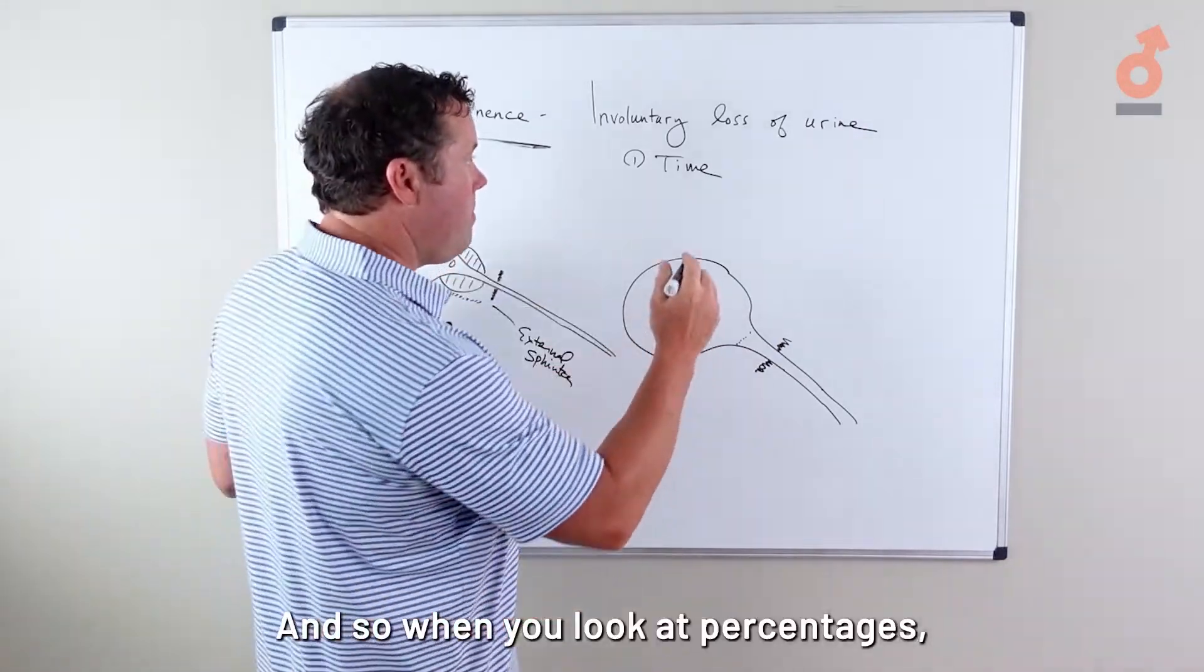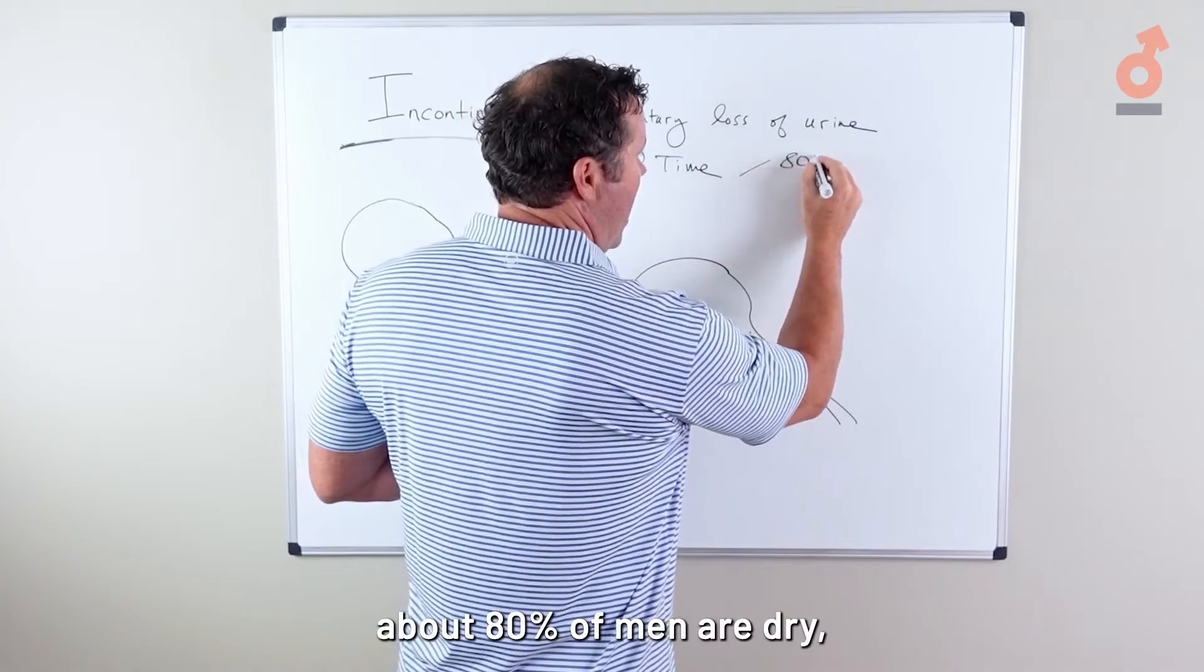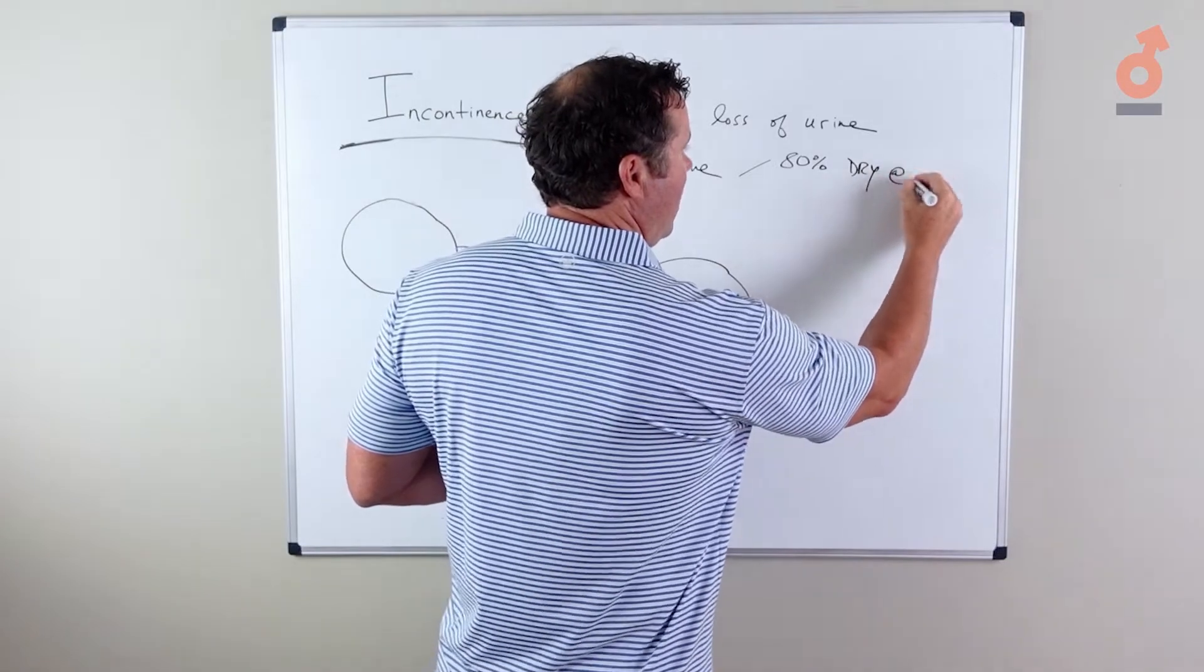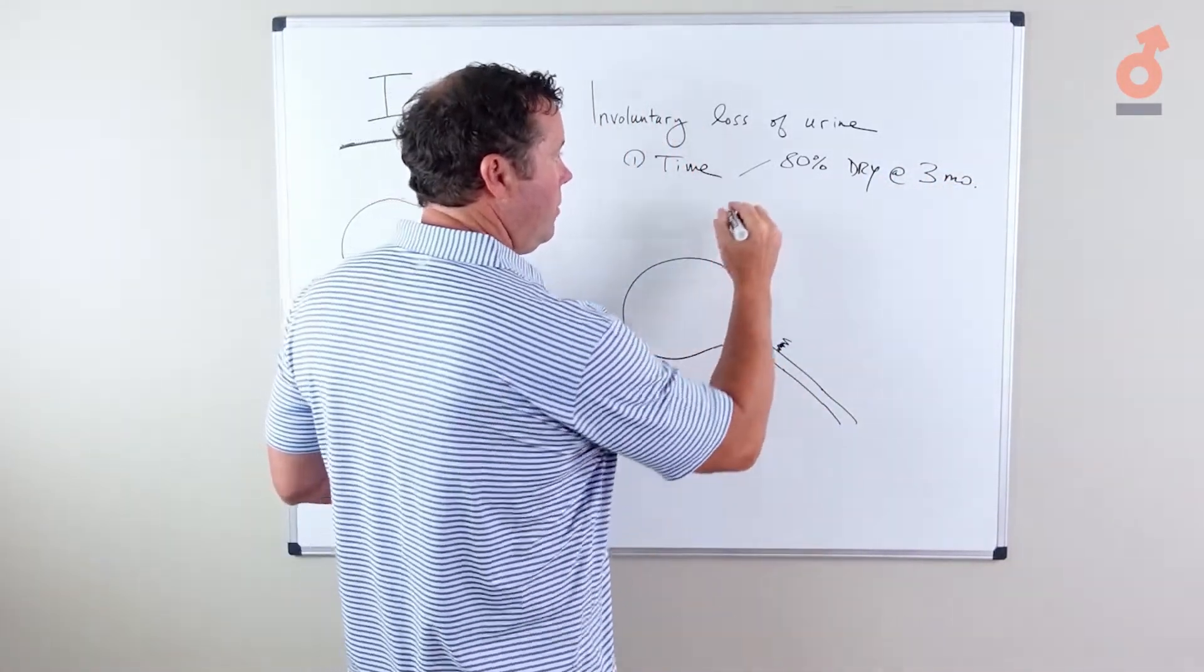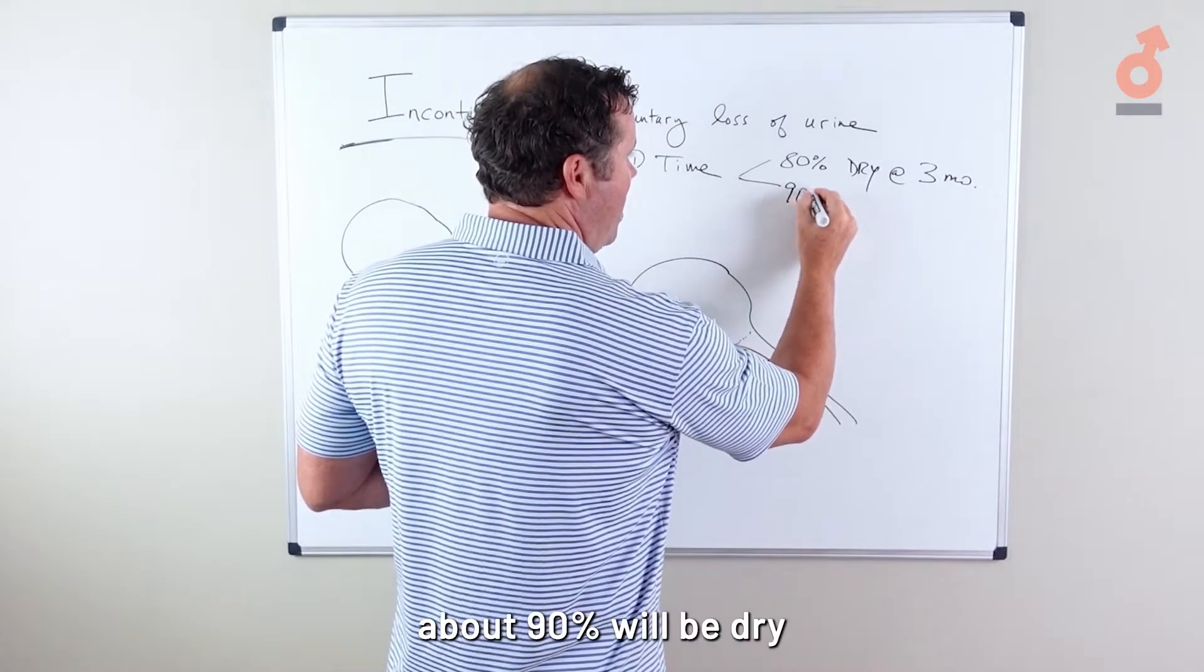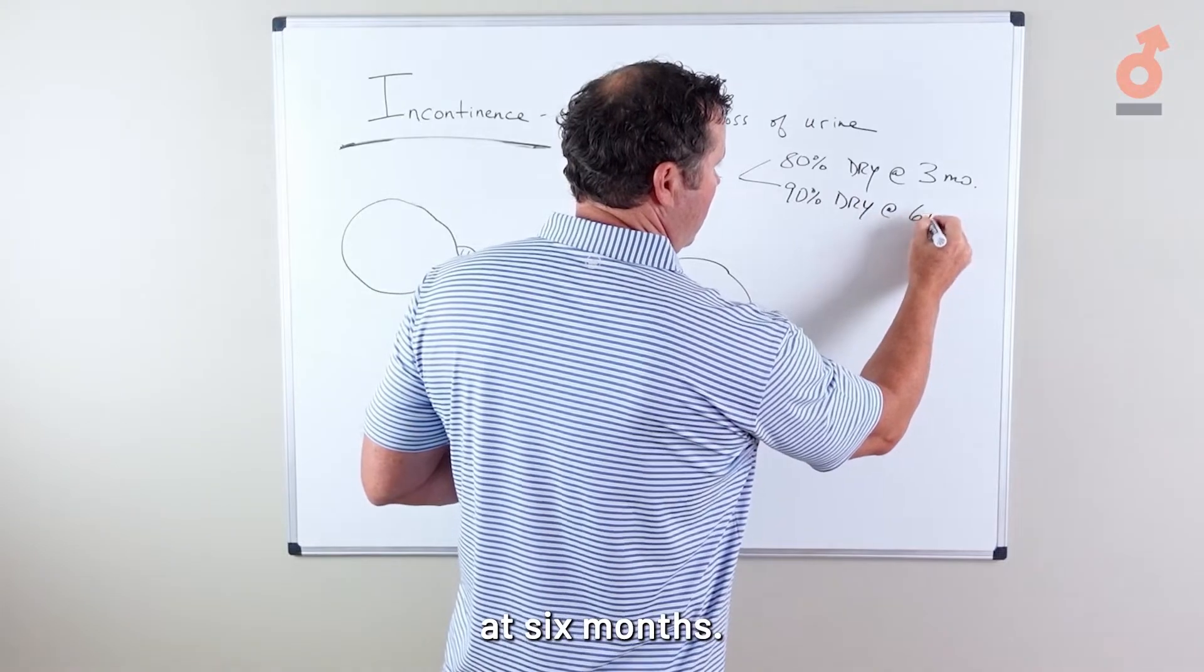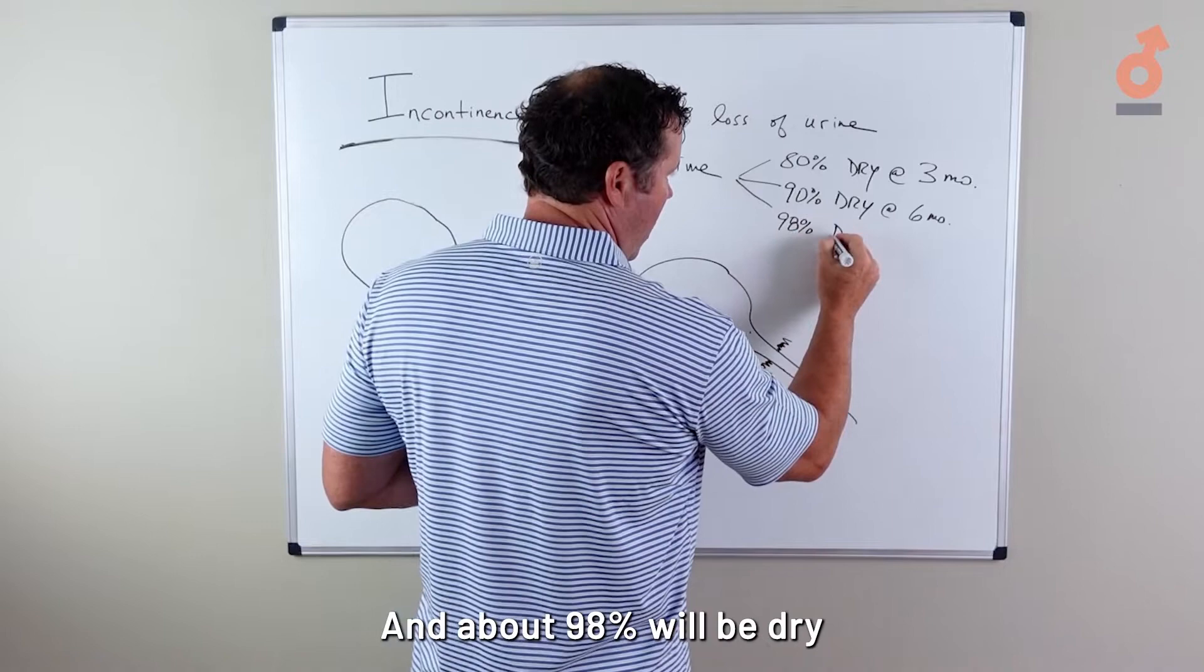When you look at percentages, about 80 percent of men are dry, meaning no pads, at three months after prostate removal. About 90 percent will be dry at six months, and about 98 percent will be dry at 12 months.